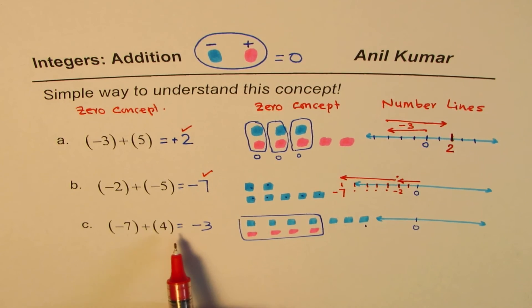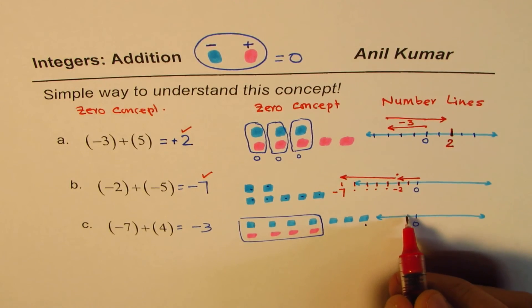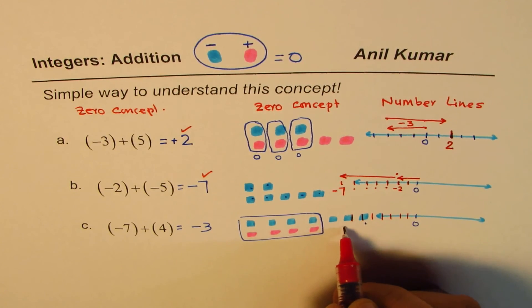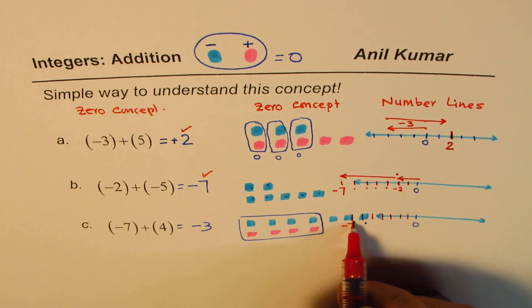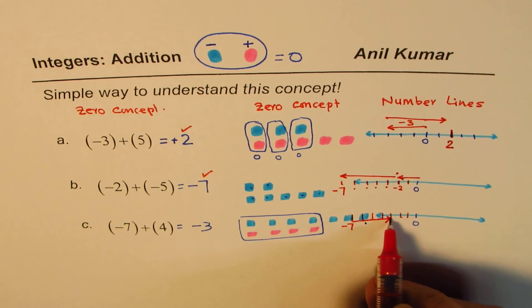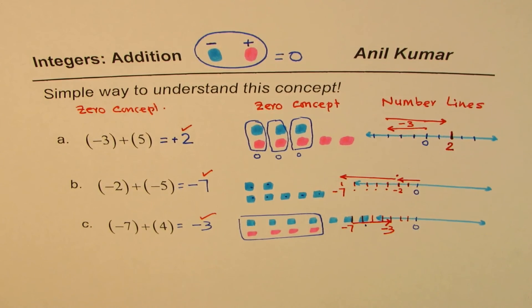The last one is minus seven plus four. We mark units one through seven to the left to reach minus seven. Then plus four means go right: one, two, three, four units — and we reach minus three. That is how you use the number line to add integers.